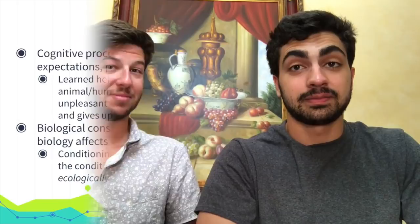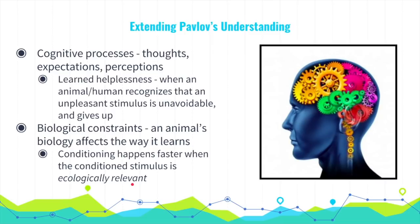Conditioning happens faster when the conditioned stimulus is ecologically relevant. For example, human males associate the color red with female sexuality — when female primates are in estrus they display red, indicating flirtation or sexual excitation.